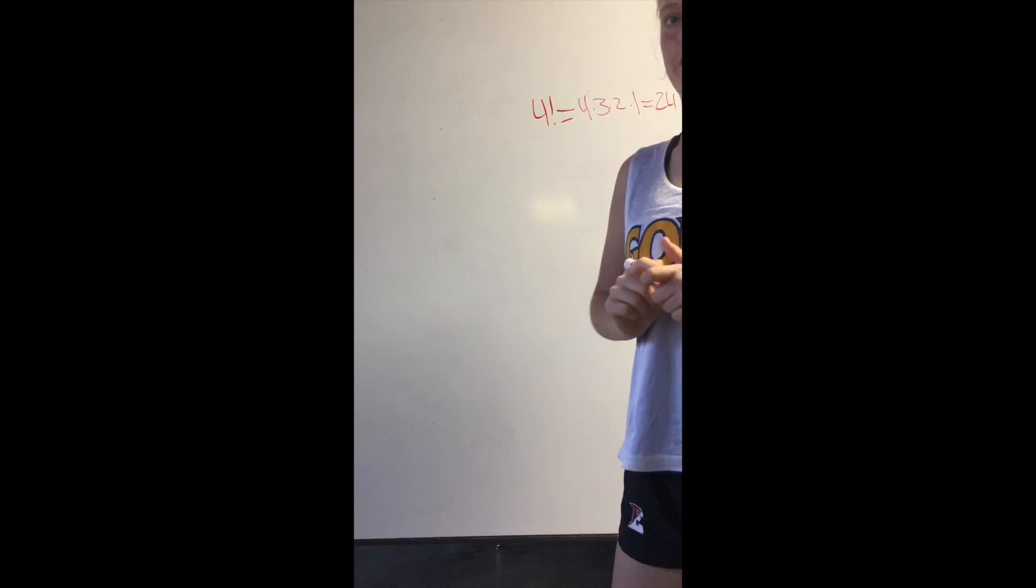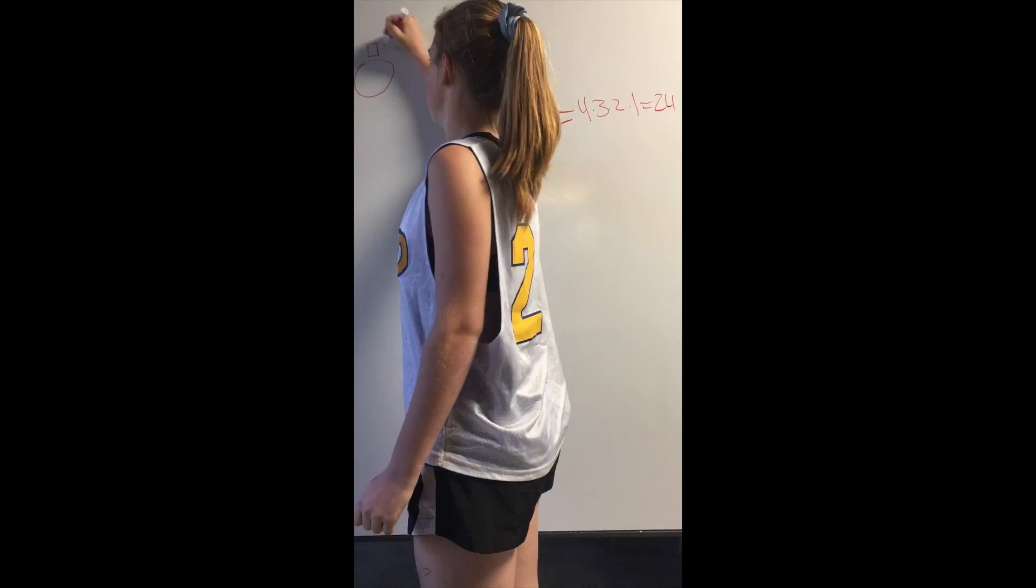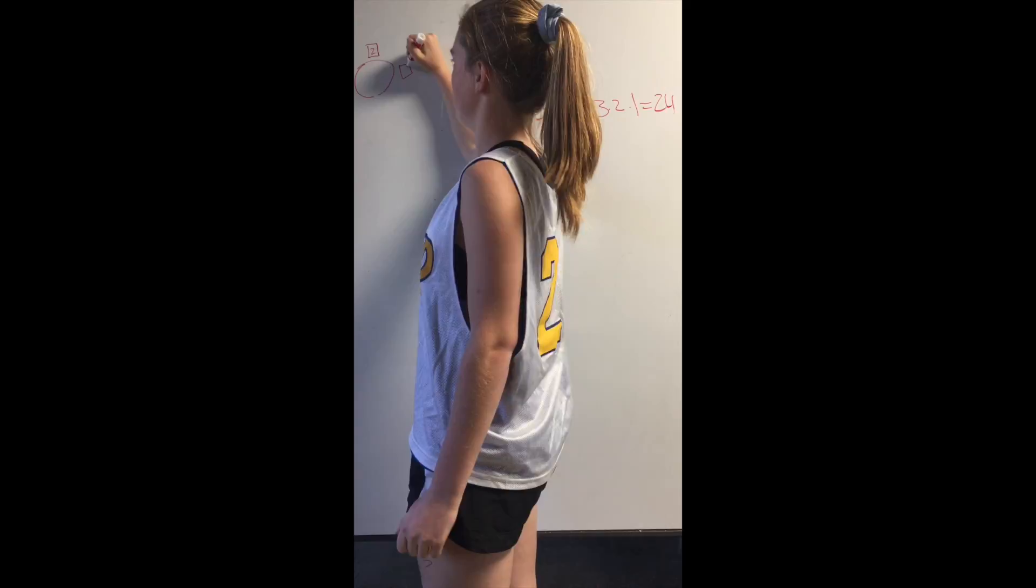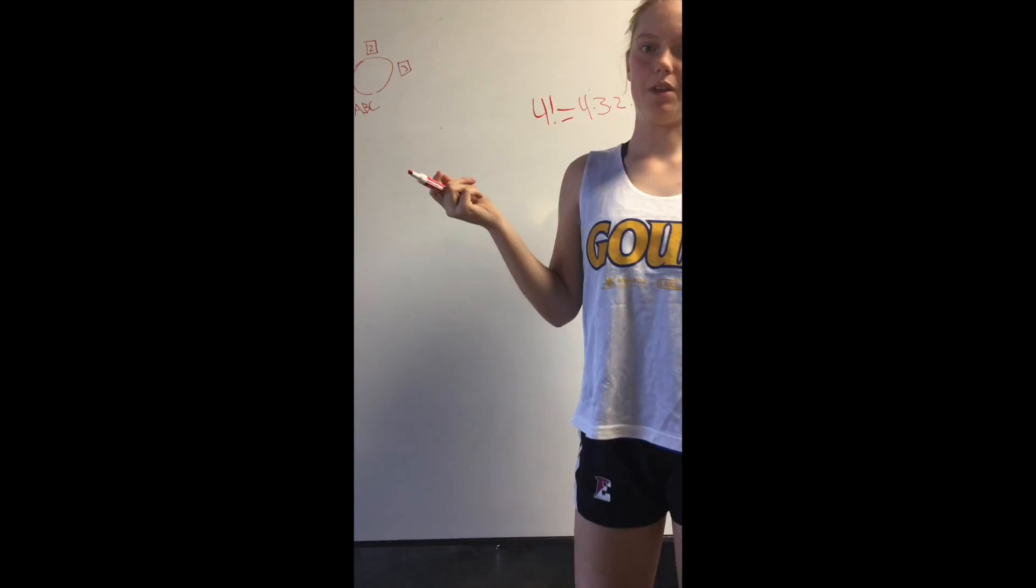Factorials can be used to solve a probability problem like this one. If we had a circle, a table, and it had 3 seats, we'll label those seats 1, 2, and 3. There's 3 people: A, B, and C. And persons A, B, and C are all looking to sit, so how many different combinations or scenarios would there be?